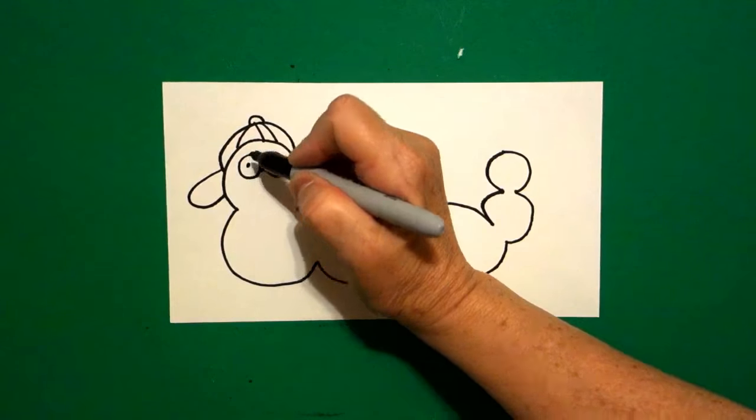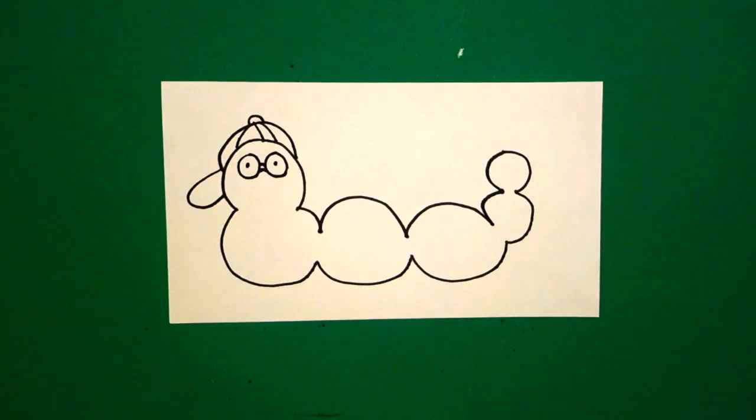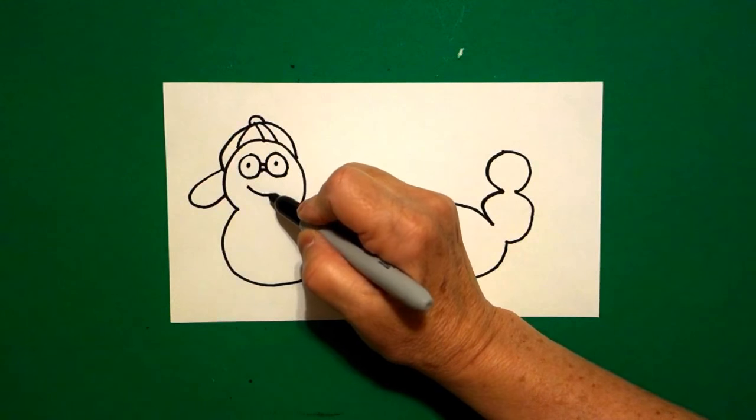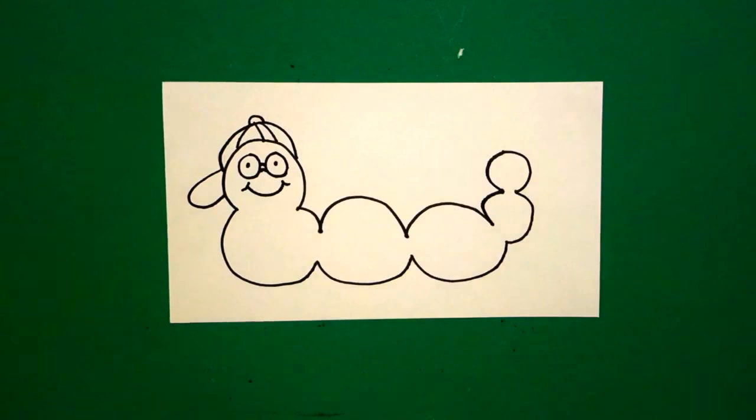Inside, I put one dot on the left, one dot on the right. Underneath, I'm going to draw a little curved line and a baby curved line, baby curved line.